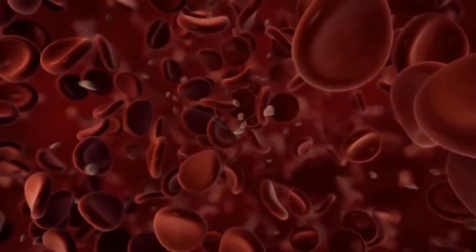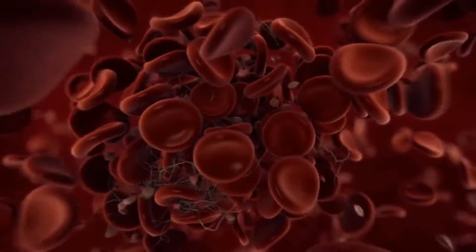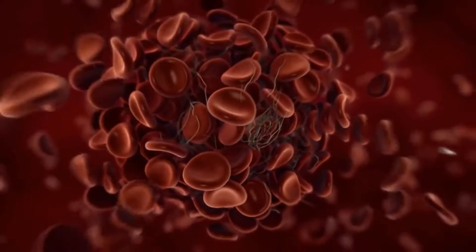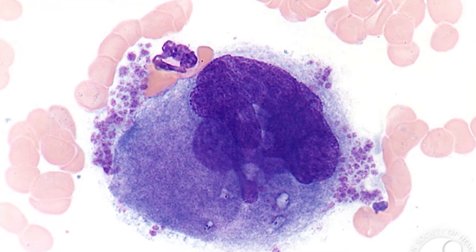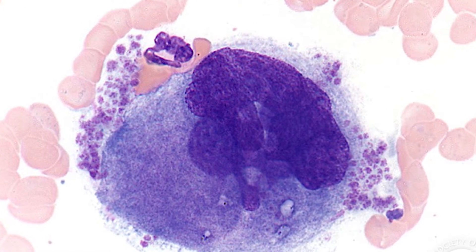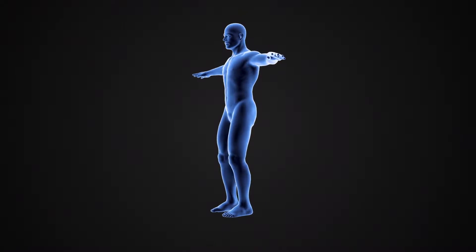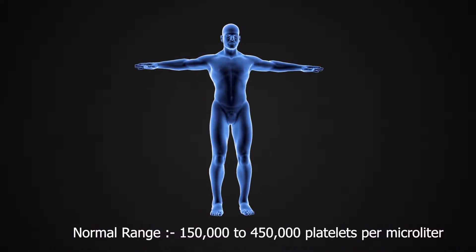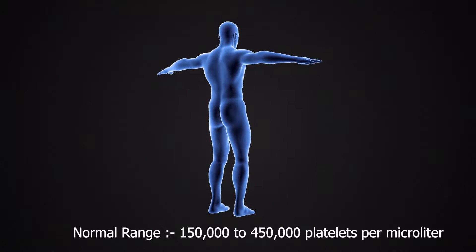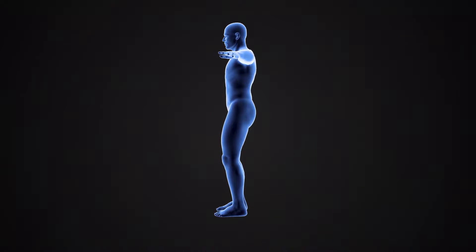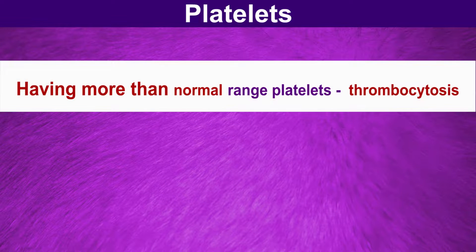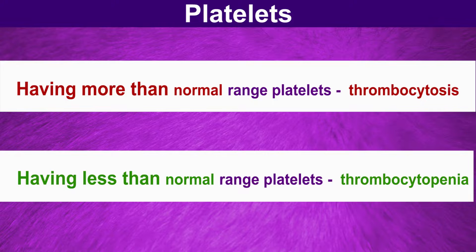Platelets are components of blood that help your body form clots in case of bleeding. They are fragments of cytoplasm derived from megakaryocytes of the bone marrow. In a healthy adult individual, the normal platelet count ranges from 150,000 to 450,000 platelets per microliter of blood. Having more than the normal range is called thrombocytosis, and having less than the normal range is known as thrombocytopenia.